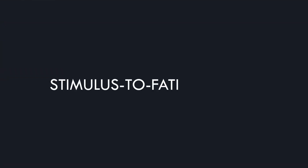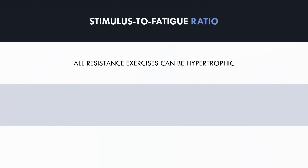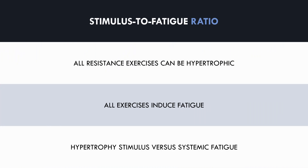First, let's explore what the stimulus to fatigue ratio is. All resistance training exercises are generally able to induce some form of hypertrophy, and all exercises also generate systemic fatigue. The stimulus to fatigue ratio is a general concept which compares the hypertrophic stimulus of an exercise to its overall systemic fatigue. We generally want to implement exercises which involve the highest hypertrophic stimulus and lower systemic fatigue.